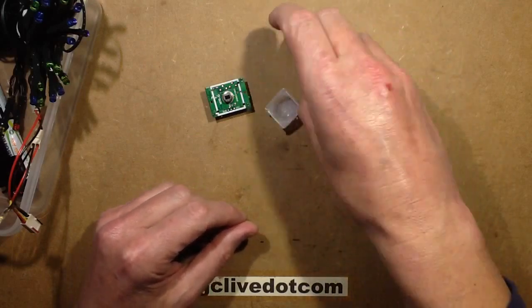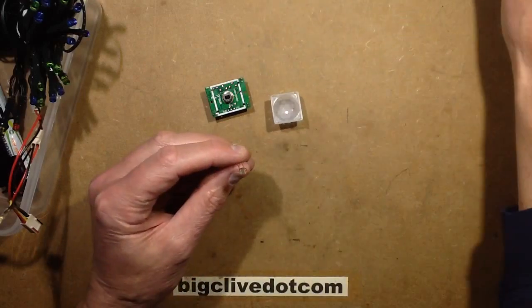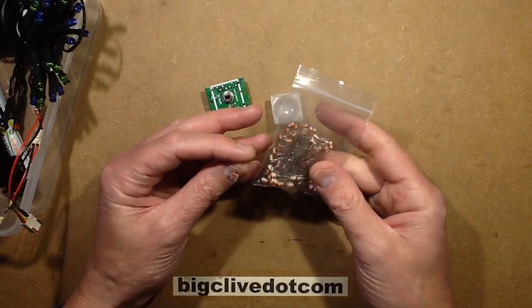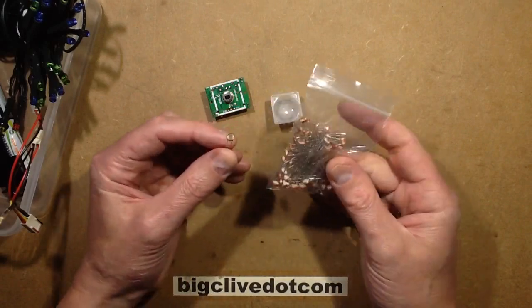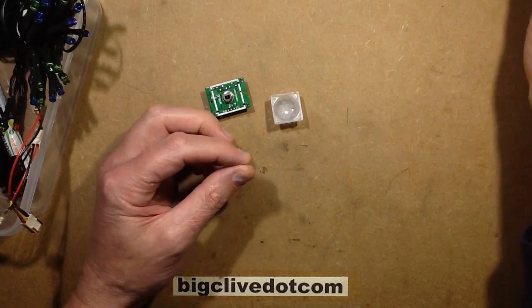So I've got an LDR. This came from eBay in a huge pack. They're so cheap you can just go on eBay and buy big packs of components like this from China because they are so common.